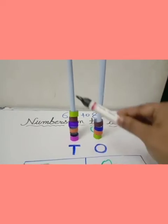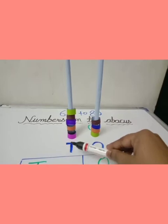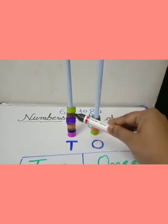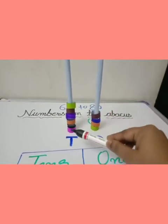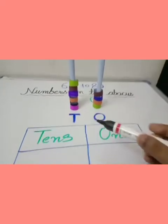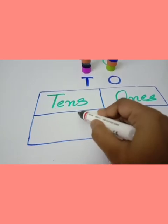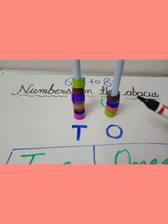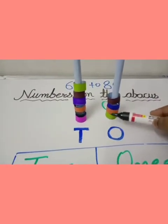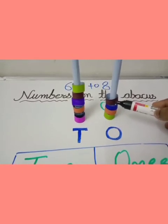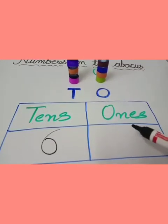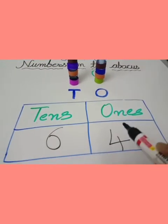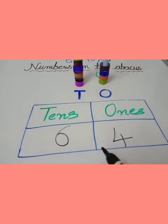We count first on the tens place ring: 1, 2, 3, 4, 5, 6 — 6 rings on the tens place. So, write down number 6 on the tens place. Now count on the ones place ring: 1, 2, 3, 4 — 4 rings on the ones place. So, write down number 4 on the ones place. Here we get the number 64.